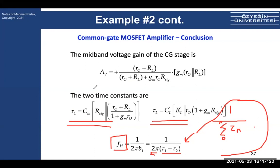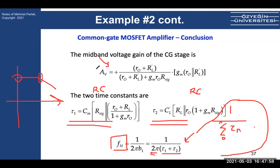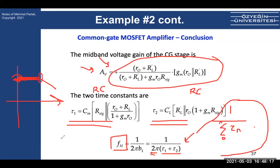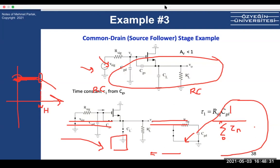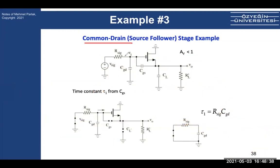The mid-band voltage gain is found the same way as before — treat the circuit as if no caps exist. At mid-band (zero frequency), the caps have no effect, so you find the gain using the standard small-signal analysis without any capacitors. What's new in this week's material is how to calculate the high-frequency cutoff frequency using the open-circuit time constant method.